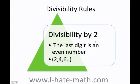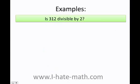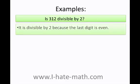First, the divisibility rule: divisible by 2. The last digit must be an even number, for example 0, 4, 8, and so on. Is 312 divisible by 2? It is divisible by 2 because the last digit is even — as you can see here, 2 is even.